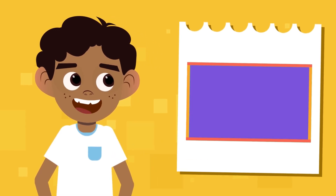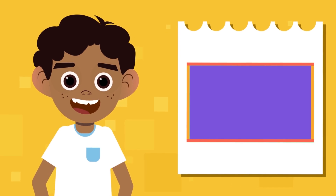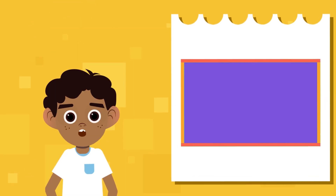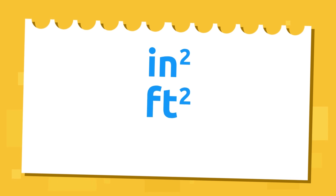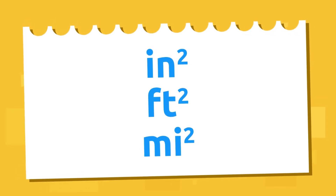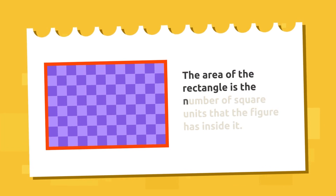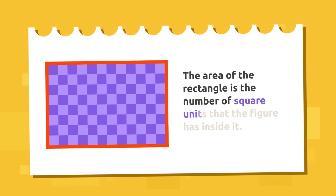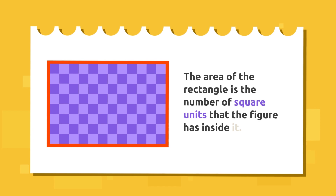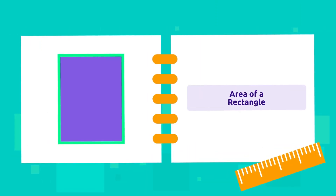Its area can be measured using different units of measurement depending on the system we use and its size. For instance, it can be measured in square inches, square feet, or square miles if it's very large. As you can see in this image, the area of the rectangle is the number of square units that the figure has inside it.